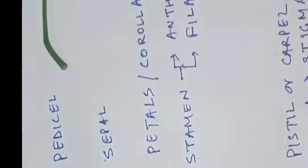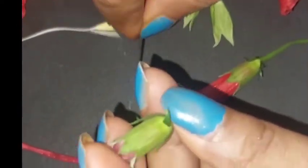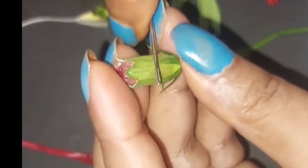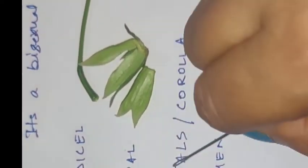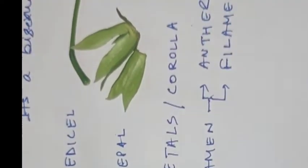This is pedicel. If we are talking about the sepals, this is the green covering of the plant which protects the inner part of the flower during the bud stage. This is the sepal which protects the flower during the bud stage.